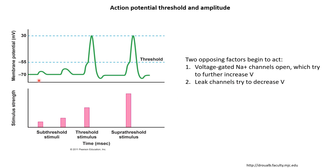If you have a very small depolarization, the number of sodium channels that open is relatively small, but the leakage currents are larger, so they bring the membrane potential back down and it's not able to reach the threshold. But if the depolarization is large enough, then the number of sodium channels that open initially is large, and they are able to dominate the leakage currents. Therefore, the membrane potential can keep on rising. This explains why we have a threshold on the depolarization.